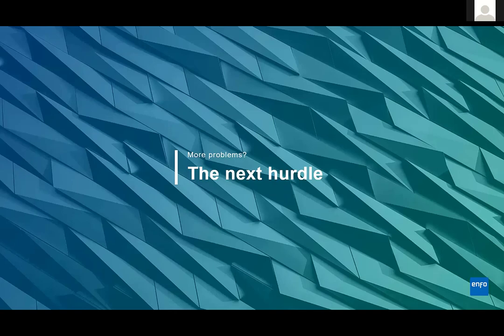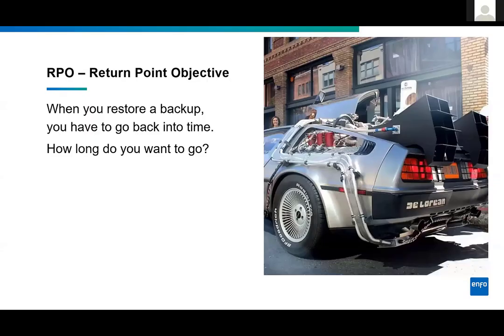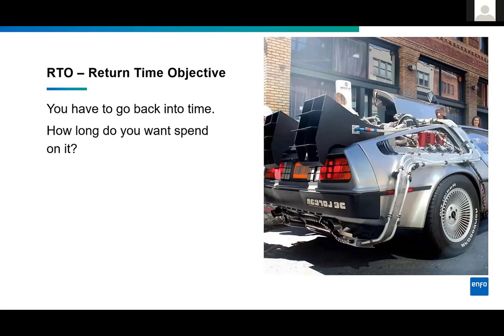But there are more problems. There are two things we need to understand — RPO and RTO. RPO is the Recovery Point Objective. It basically means how far back in time do you want to go when you restore a backup? If you back up every five minutes and you need to restore your database, you basically travel back in time to how your data looked five minutes ago. So you want to have as low a recovery point objective as possible, and zero would be ideal.